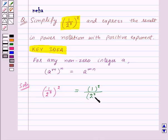Now, 1 squared is 1, so this will be 1 / (2^3)^2, which equals 1 / 2^(3×2).